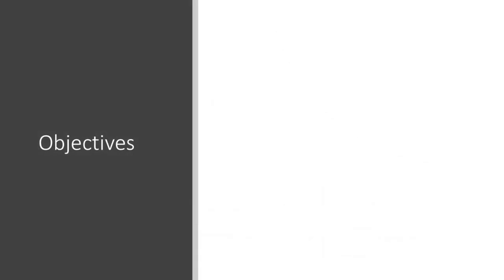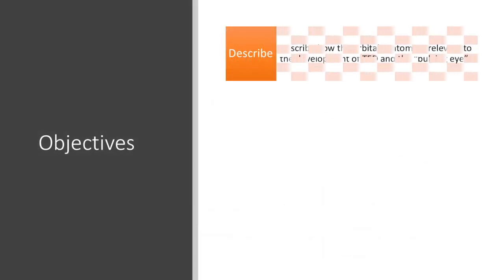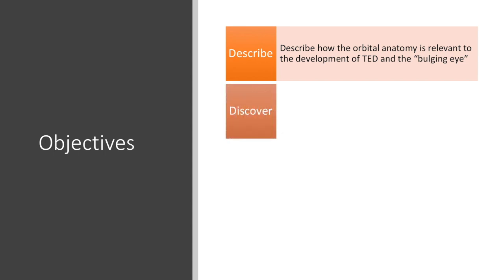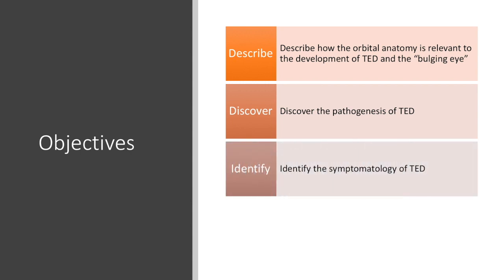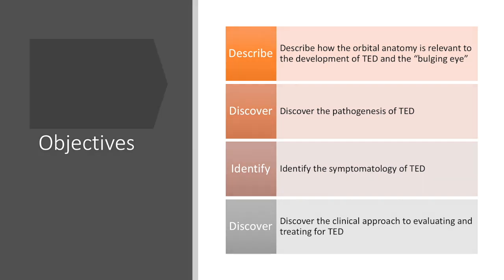Our objectives are to describe how the orbital anatomy is relevant to the development of thyroid eye disease and the bulging eye, to discover the pathogenesis of thyroid eye disease, to identify the symptomatology, and to discover the clinical approach to evaluating and treating thyroid eye disease.